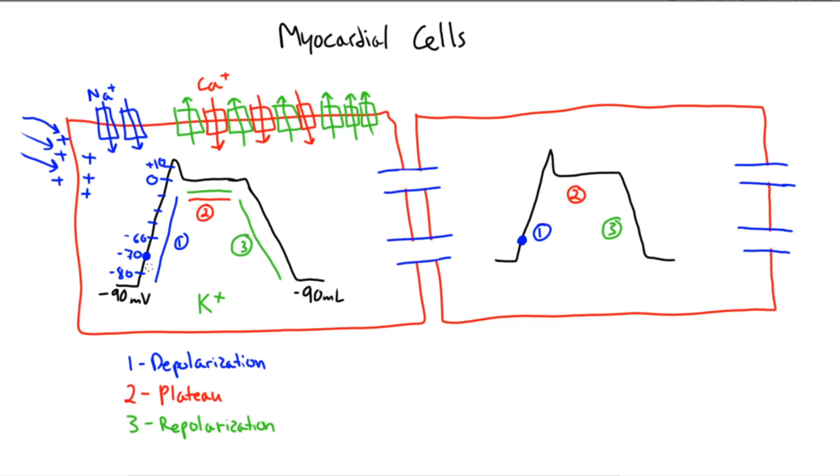Once the cell is depolarized and voltage is around 0, sometimes 10 millivolts, voltage-gated sodium channels close and calcium and potassium channels open. And in this plateau phase, calcium enters and potassium leaves, which means that there's no net change in potential.